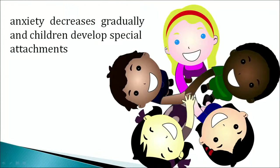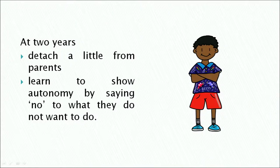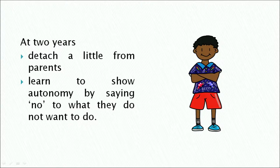The anxiety decreases gradually and children develop special attachment by the age of 2 years. Children begin to detach a little from their parents and learn to show autonomy by saying no to what they do not want.